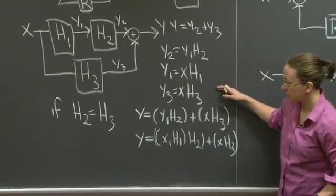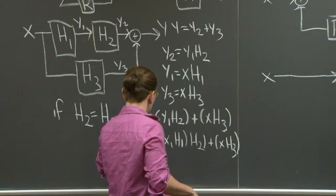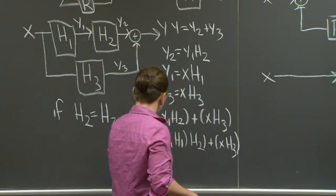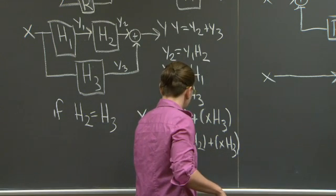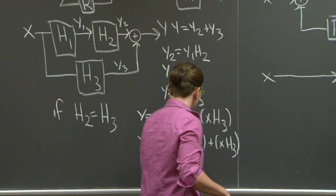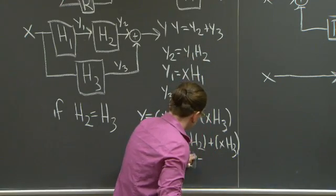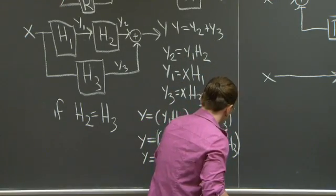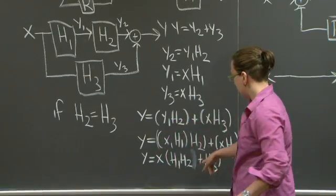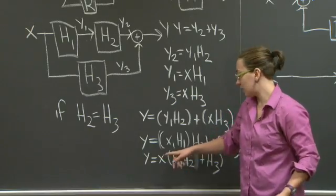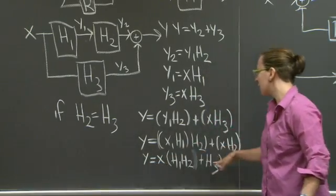Here I've just made the substitutions of the equations above. And factored out the x. If I wanted the system function, I would then just divide by x, and then I would have y over x is equal to this expression.